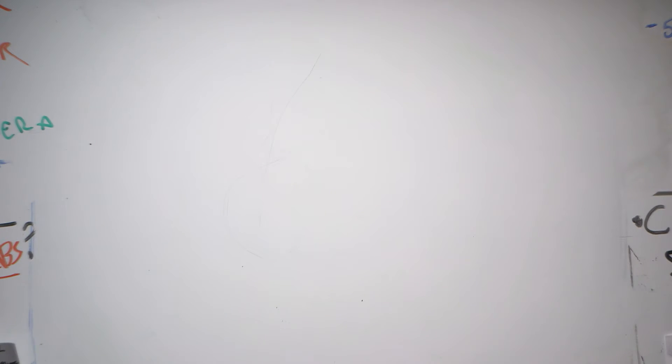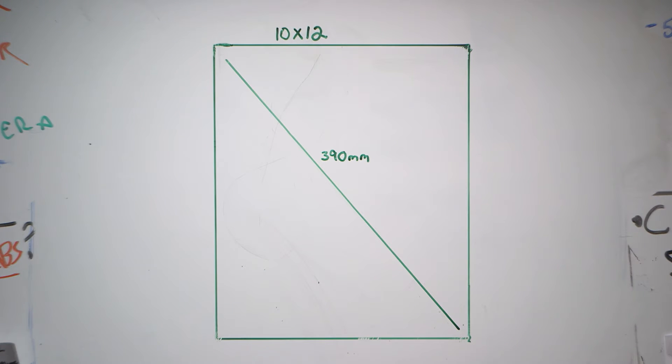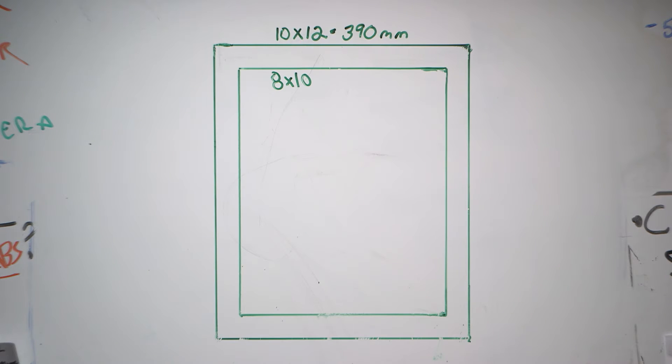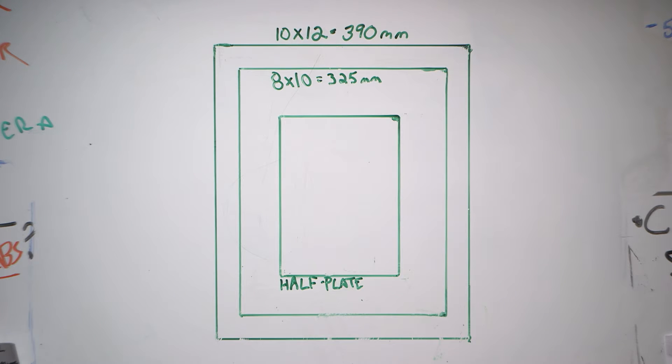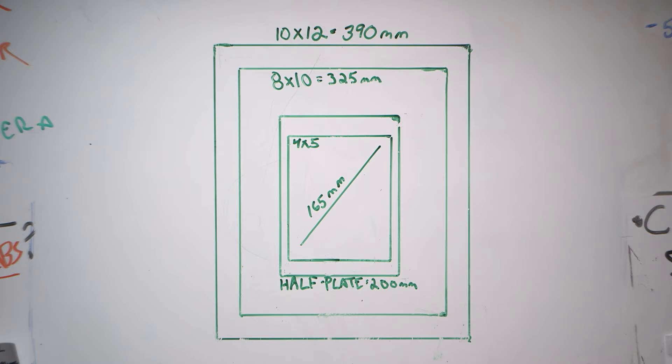Before we get into focal length, some of you may be wondering: what is the standard lens for the format that I'm shooting? Well, there's a real simple way to determine that, so let's go to the whiteboard. By measuring the diagonal area of each format, we can estimate the standard focal length. So: 10 by 12 is 390 millimeters, 8 by 10 is 325 millimeters, half plate is 200 millimeters, and 4 by 5 is 165 millimeters.